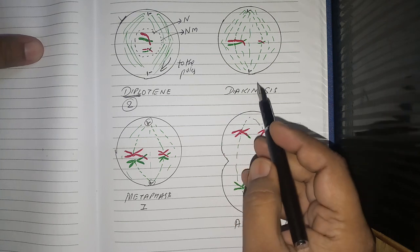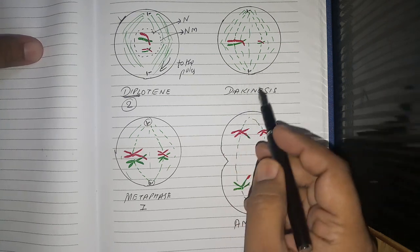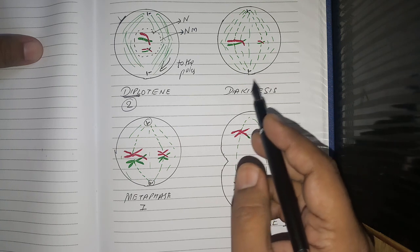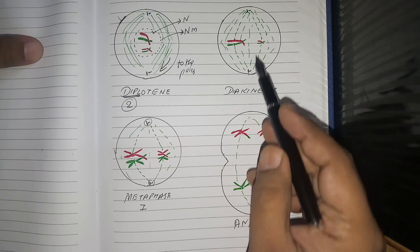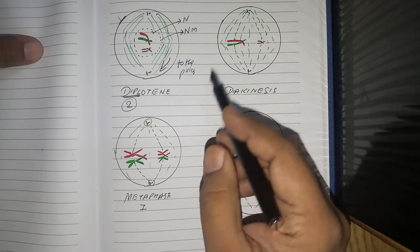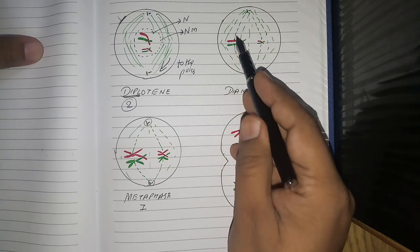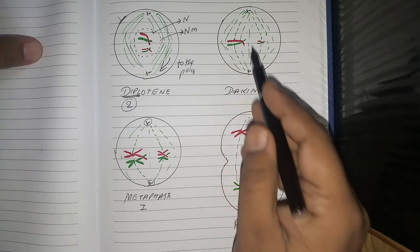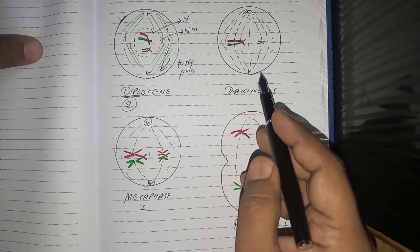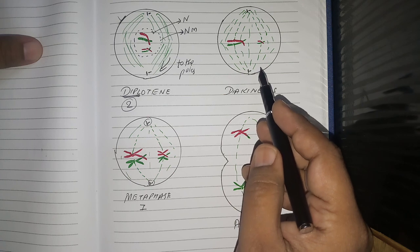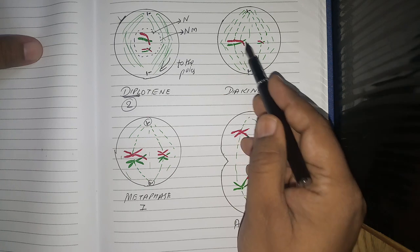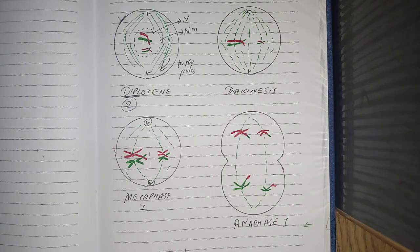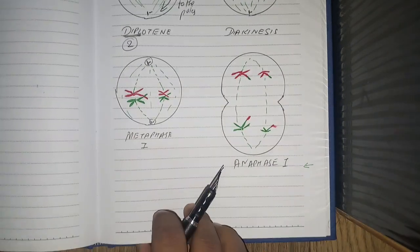Then there is diakinesis. This is the fifth stage of prophase I. What happens is nuclear membrane is gone, nucleolus is gone. As you can see, there are spindle fibers attached to the centromeres. They become double.